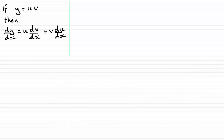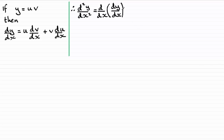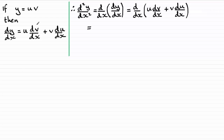Let's start by finding d²y/dx². What would we need to do? Well, we would need to differentiate dy/dx with respect to x, and we already know what dy/dx is — it's this result here — so we would need to differentiate this with respect to x. We're going to need to use the product rule again. When using the product rule, I like to think of it as the product of two parts. We take the first part,